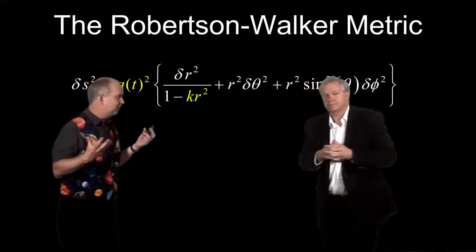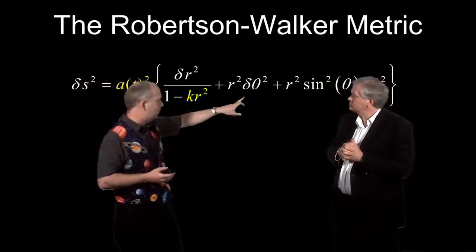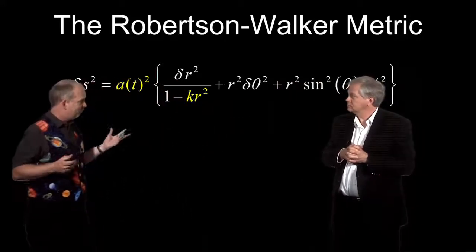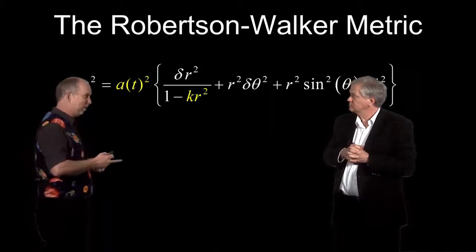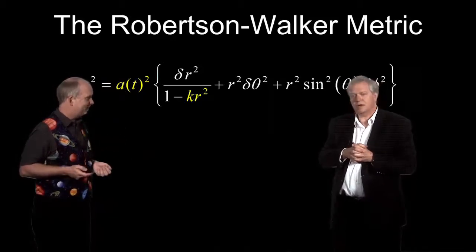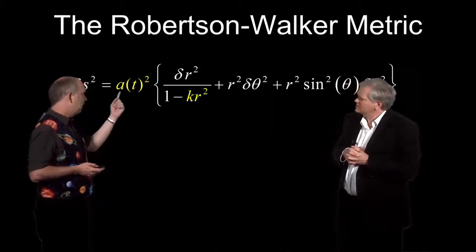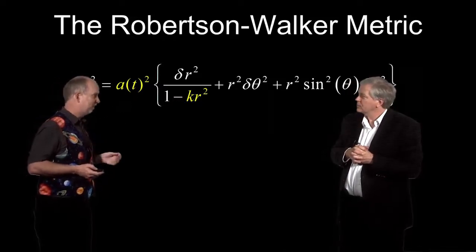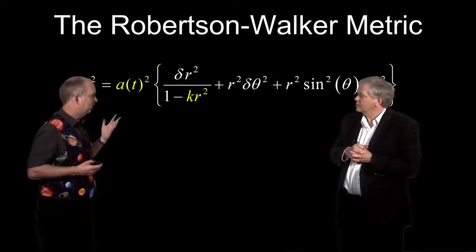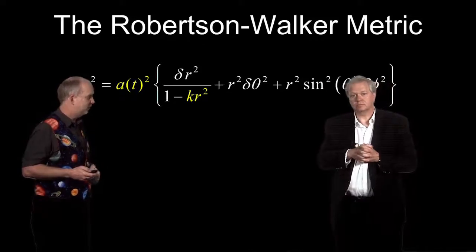So any two objects have, say, a particular coordinate, a particular r, theta, and phi, then without doing anything or going anywhere, they'll get further apart. So that sounds just like what we need to make the universe expand. So that's good. That's if at is getting bigger. At could, of course, be getting smaller or doing anything, really. We're going to have to come back to exactly how at behaves.